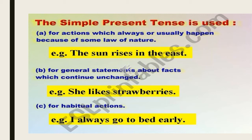The simple present tense is used for an action which always or usually happens. For example, the sun rises in the east — today, tomorrow, yesterday — there is no change. It always rises in the east. This is a nature's law. Similarly, water boils at 100 degrees — that's a scientific truth. Universal truths and scientific truths always take the present tense form.